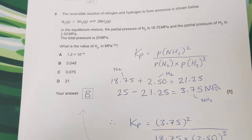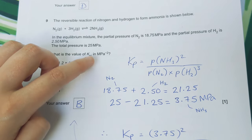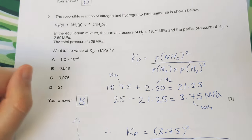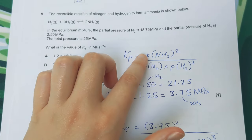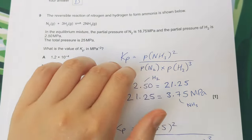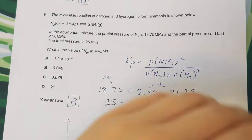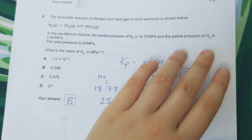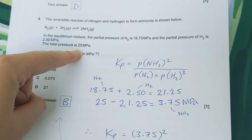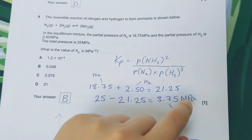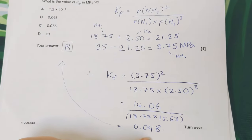This next question isn't part of rates, but we'll go over it quickly — it's an equilibrium question about Kp, the equilibrium constant in terms of pressure, which applies to reactions involving gases. Kp is very similar to Kc: we use the partial pressures of the products raised to the power of their moles, divided by the partial pressures of the reactants raised to the power of their moles. We're given two partial pressures — nitrogen and hydrogen — and we need to work out the partial pressure of ammonia by subtracting their sum from the total pressure, then plug everything into the Kp expression. The answer is 0.048.